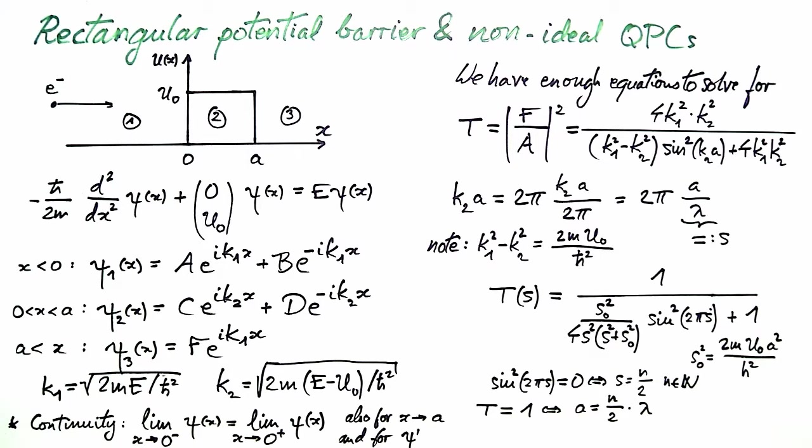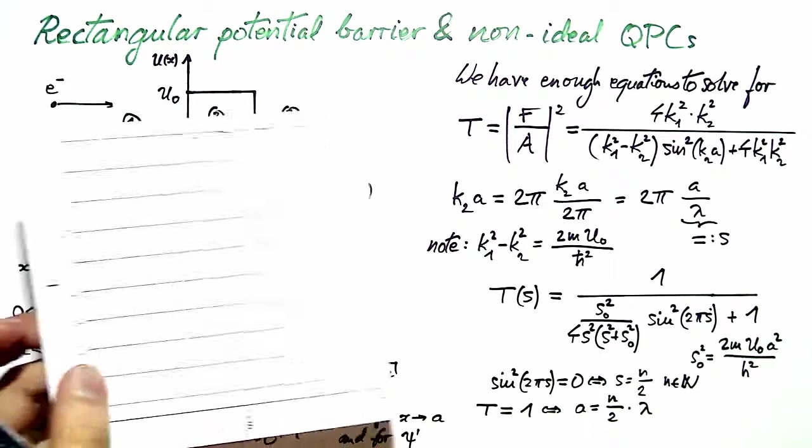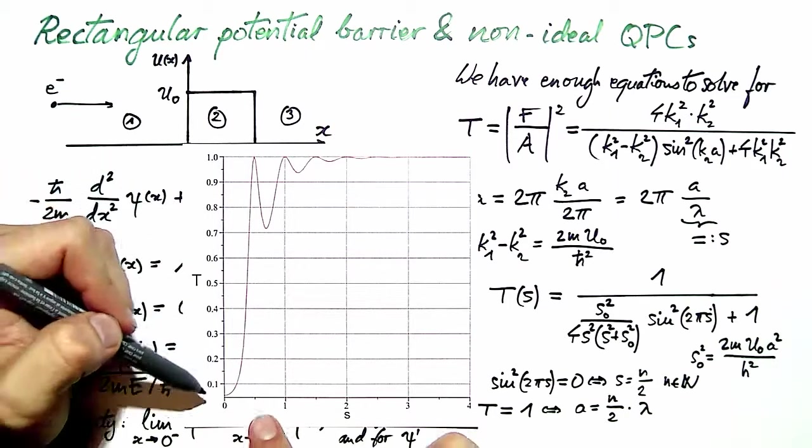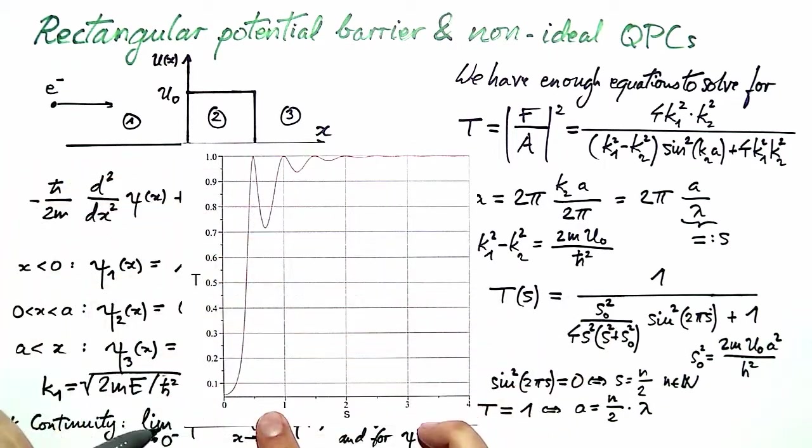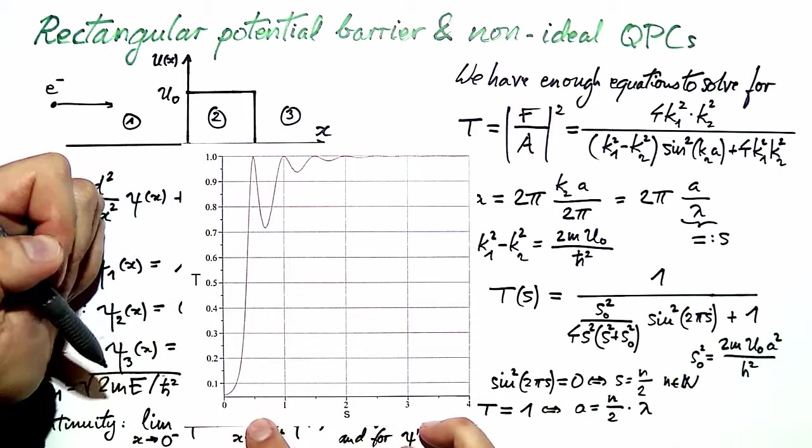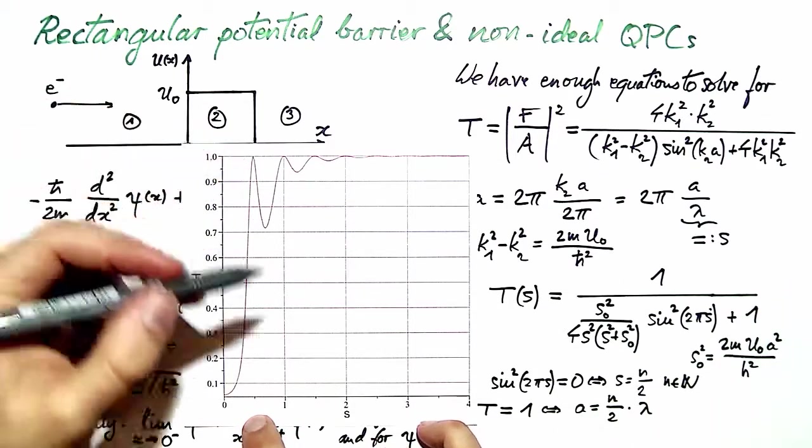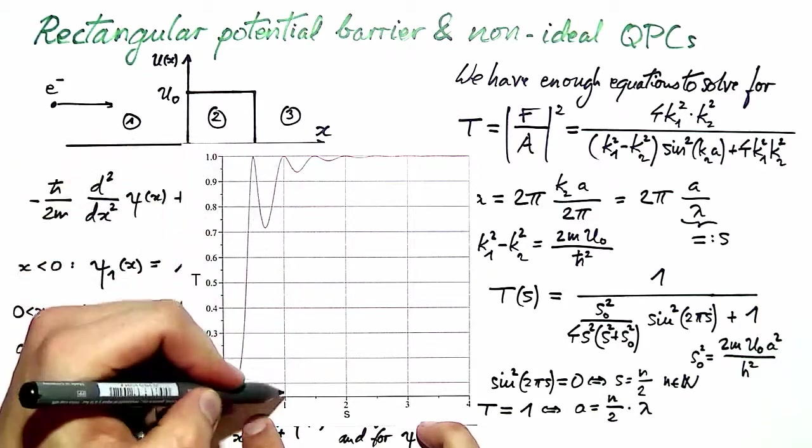If we plot t of s, our analysis is confirmed. We see that t is at most 1 and is exactly equal to 1 whenever s is a multiple of 1/2.